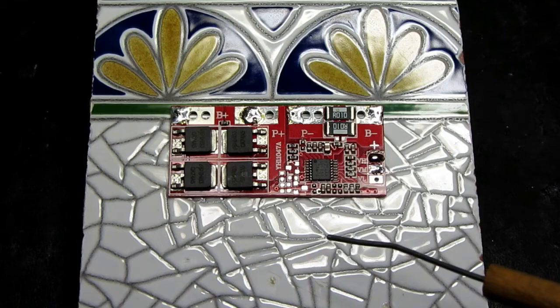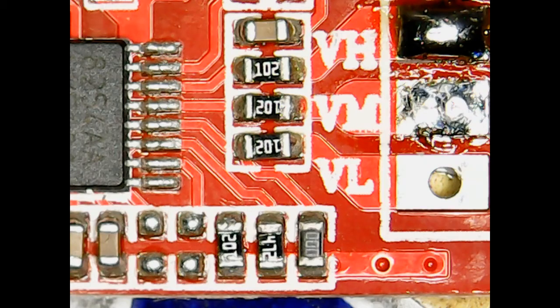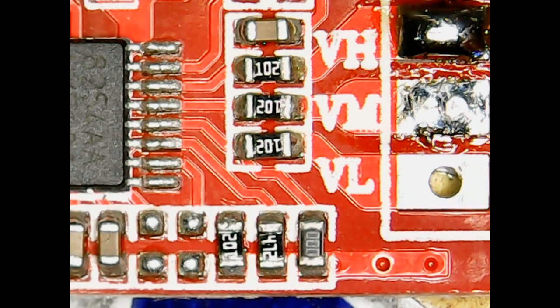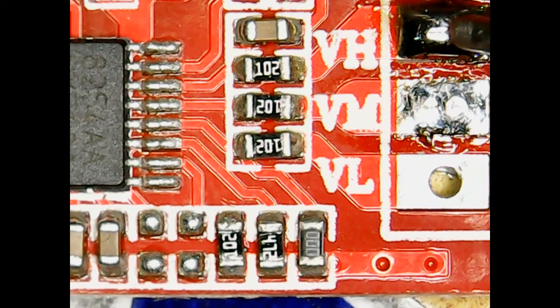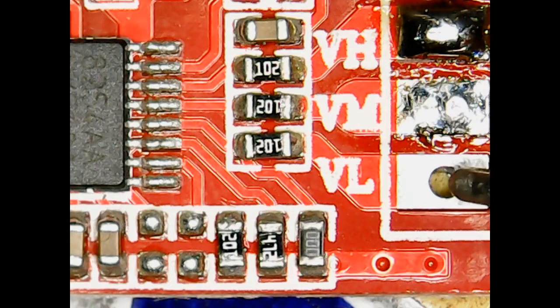Here we can see a close-up of the area of the circuit board that's of interest to us. We can see this is the three-cell configuration with the high cell and medium cell. The low is not used—that is reserved for the four cells.